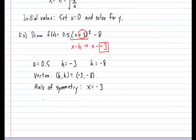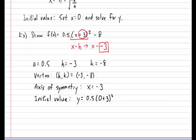Next let's calculate our initial value. Very easy. Just set x equal to 0 and calculate your y. So y equals 0.5 multiplied by 0 plus 3 squared minus 8. And that will give us negative 3.5.